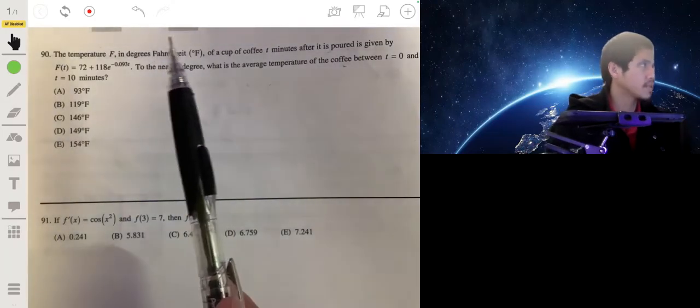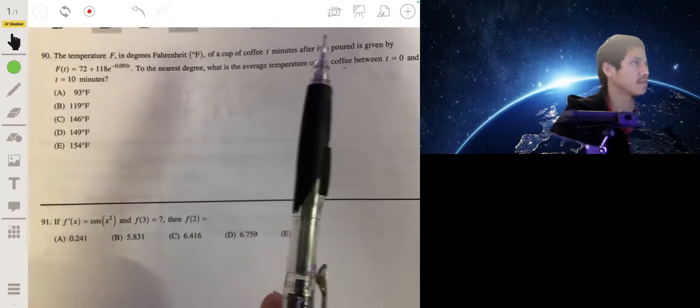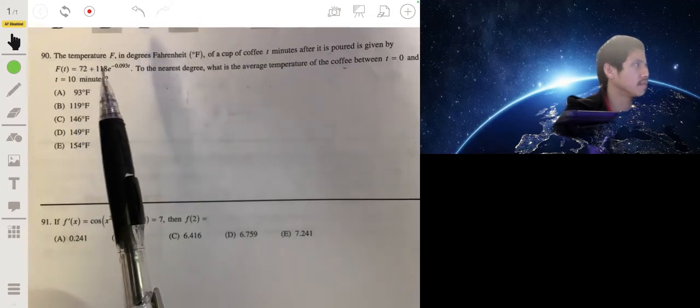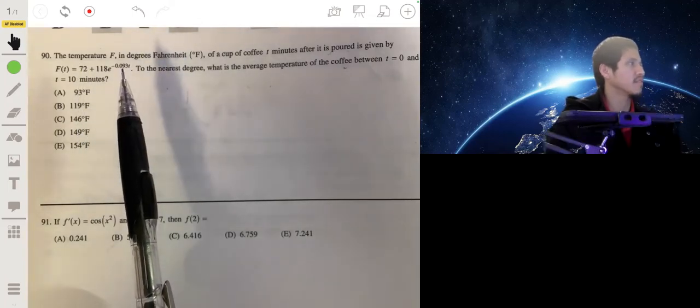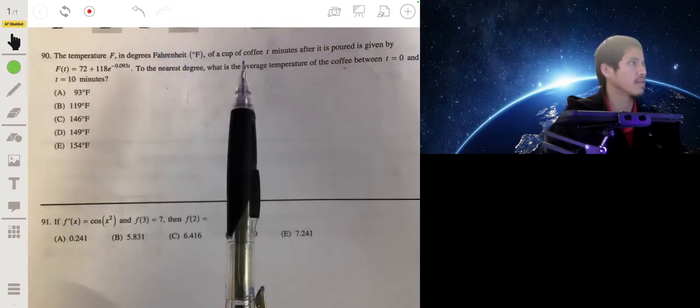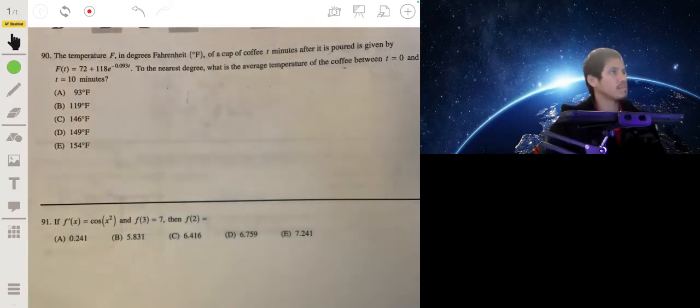The temperature F in degrees Fahrenheit of a cup of coffee t minutes after it is poured is given by the equation F(t) = 72 + 118e^(-0.093t). To the nearest degree, what's the average temperature of the coffee between t=0 and t=10 minutes?